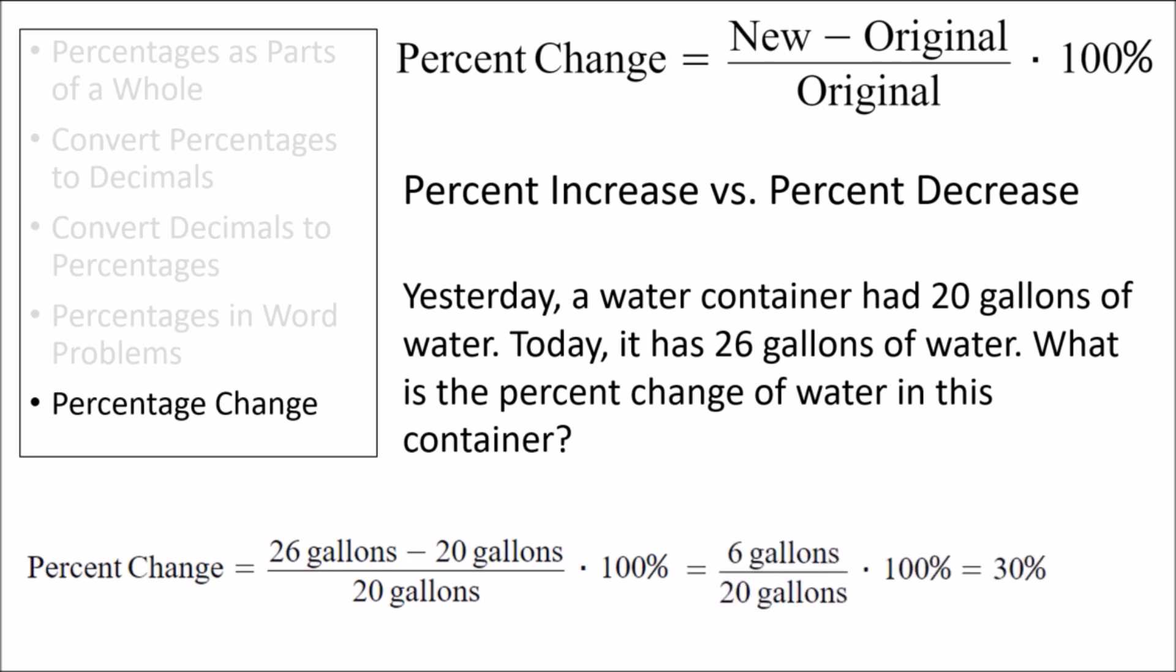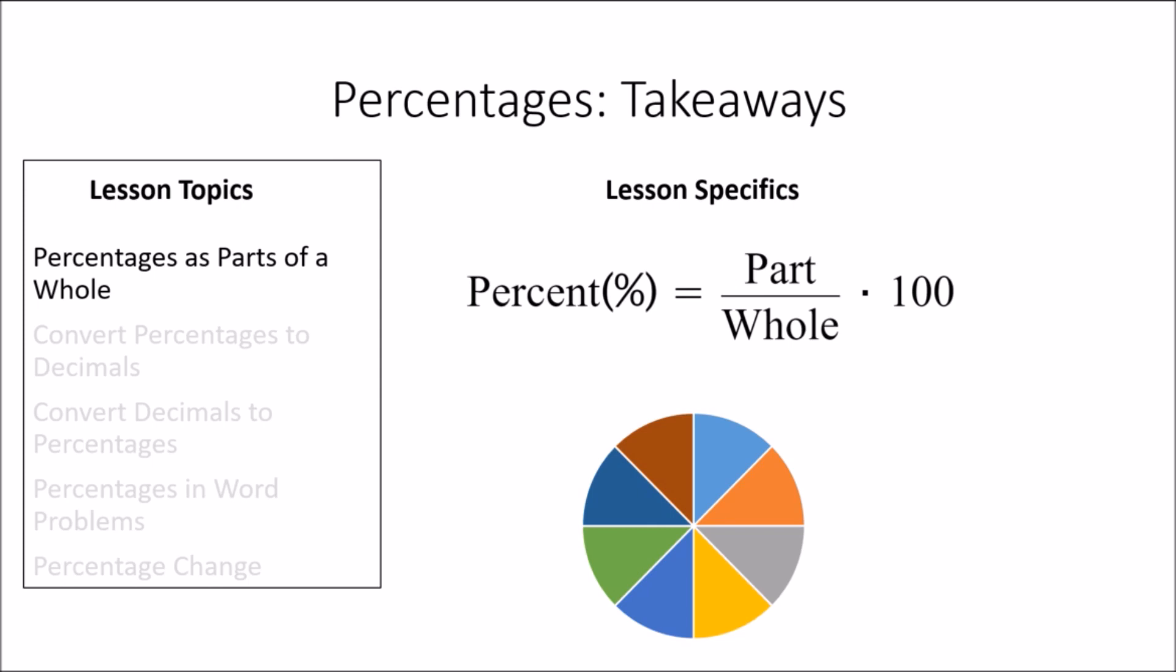We can then find the difference between these two values and divide by the original value, then multiply by 100%. This will give us a percent change of 30%. And since this percent change is positive, we could also call it a percent increase of 30%.